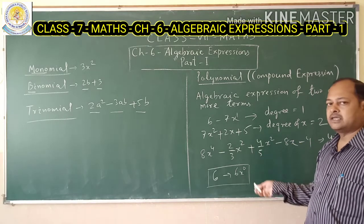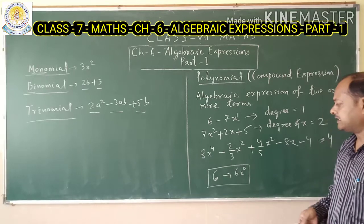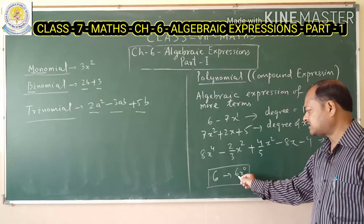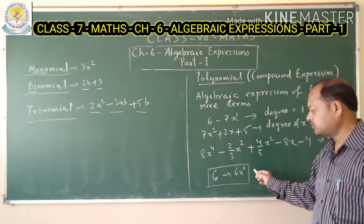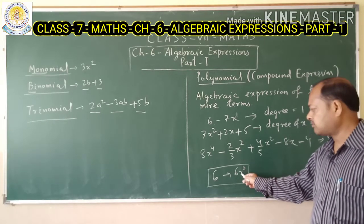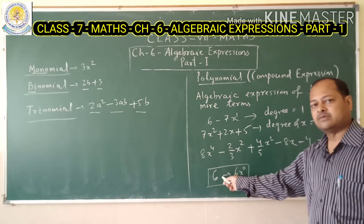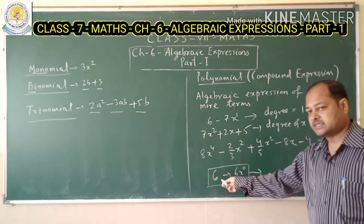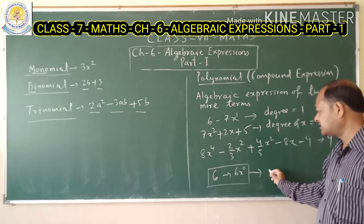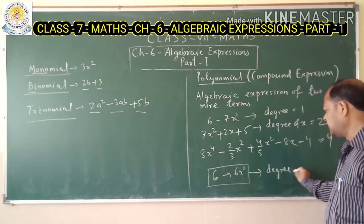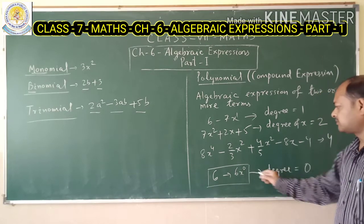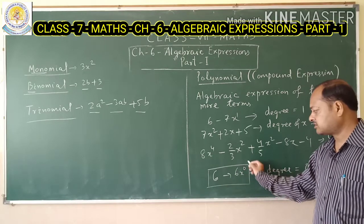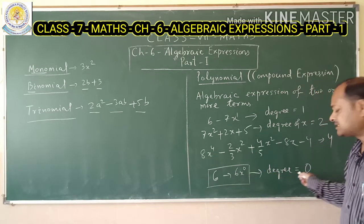The highest power of a literal in an expression is called the degree. For a constant like 6, we can write it as 6·x⁰, because x⁰ equals 1, so 6·x⁰ equals 6. Therefore the degree of x in a constant is zero. So in the case of 6, the degree is 0.